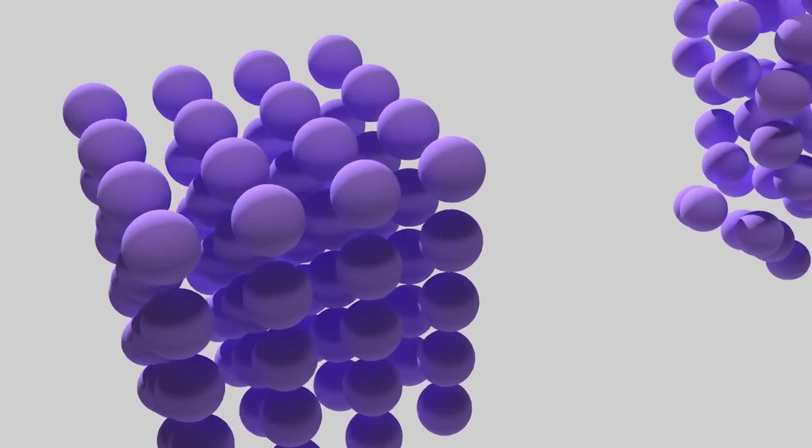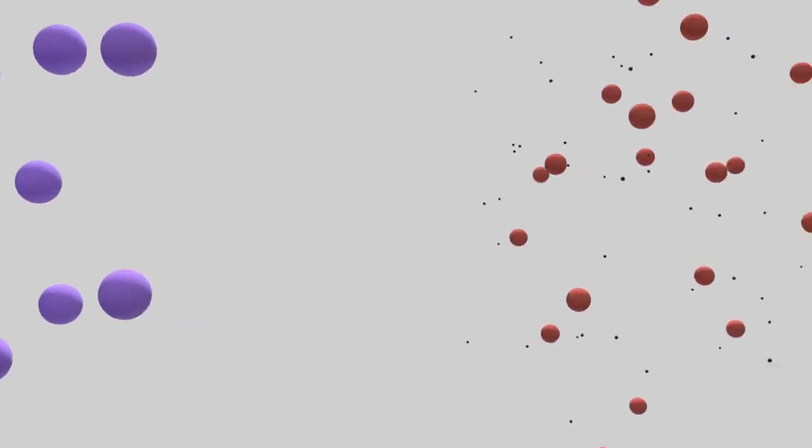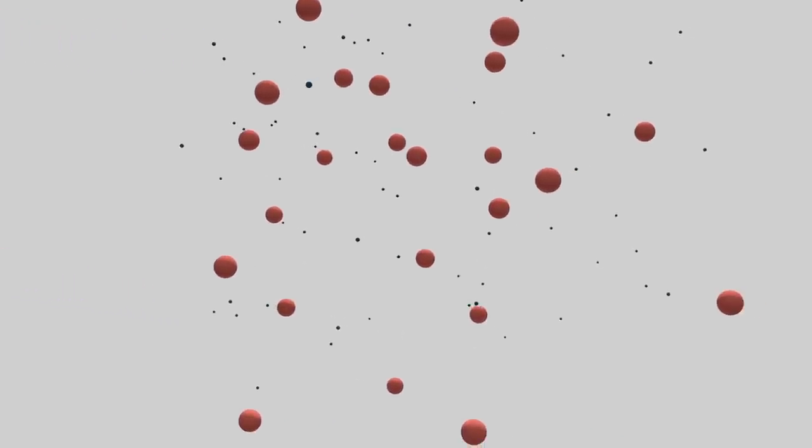Plasma is an ionized gas. So you take a solid, you heat it up, it melts to a liquid. Keep heating the liquid, it boils to a gas. If you keep heating the gas, then the pieces that make up the gas start to come apart. So you get negatively charged electrons and positively charged nuclei all swimming around together.